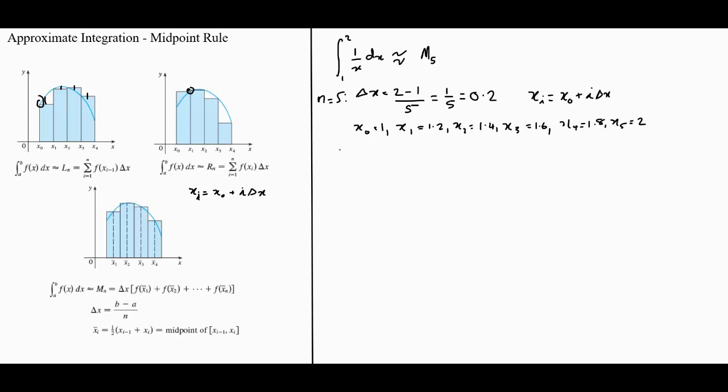Now, we'll calculate the midpoints, so x1 bar is equal to half of x0 plus x1, so that's going to be equal to 1 plus 1.2 divided by 2, so that's going to give me 1.1, and similarly.